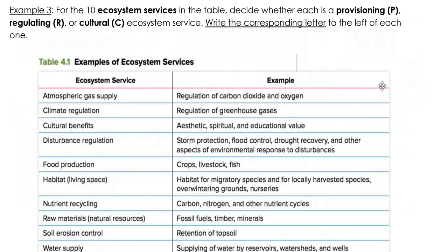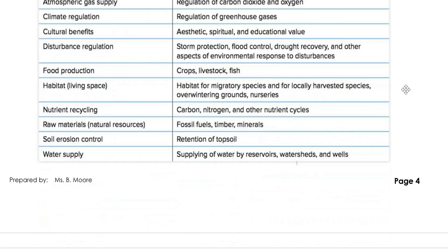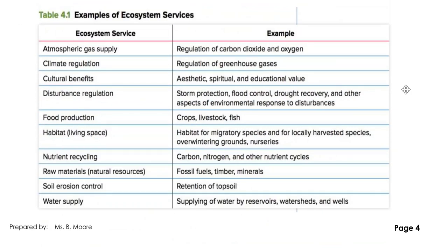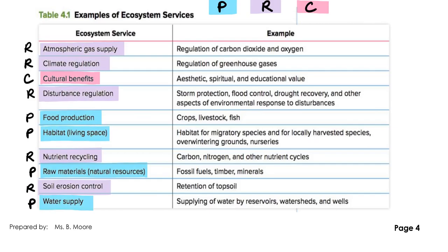So let's try example three. For each of these ecosystem services below, it's your job to classify them as provisioning, regulating, or cultural, and write the corresponding letter to the left of each service. Please pause the video here while you do that. I color coded my ecosystem services just to make it easier to compare our answers here, so feel free to pause the video while you make sure you have the right designations.